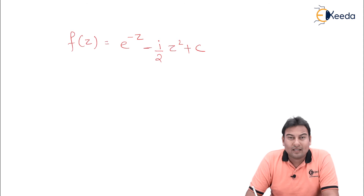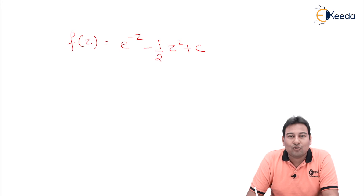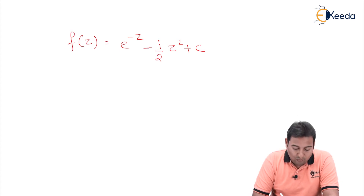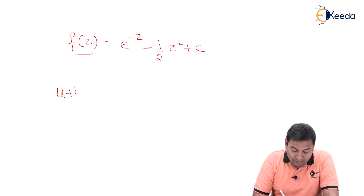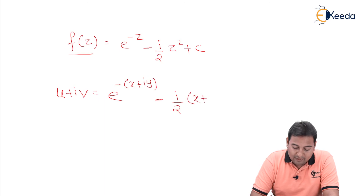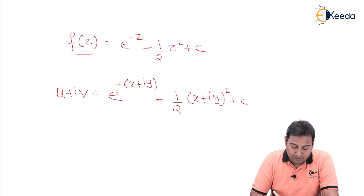Friends, this is not yet done. My aim is to find the orthogonal trajectory, and as discussed, the orthogonal trajectory of u is v. So we need to find v. For that, we separate u and v by writing f(z) = u + iv. So: u + iv = e^(−(x+iy)) − (i/2)(x+iy)² + c.